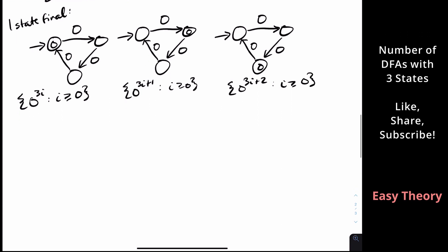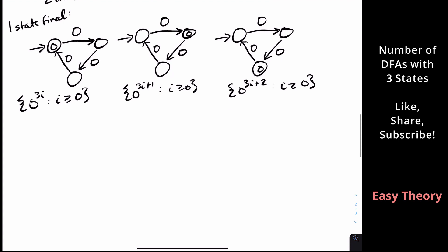There's one other possibility with three states: the start state sends zero to a second state, and that second state is final and goes to a non-final third state that self-loops. The language of this machine is just {0} and nothing else.